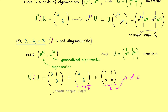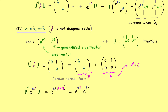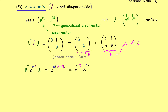The Jordan normal form is all we need to calculate the matrix exponential. We apply the same transformation as before, then calculate the matrix exponential of D plus N. Since D and N commute, we split it into a product of matrix exponentials. The diagonal part gives e to the power t-lambda, and the nilpotent part gives a finite series: the identity matrix plus t times N, since N squared equals zero. In higher-dimensional cases, this sum can be longer.